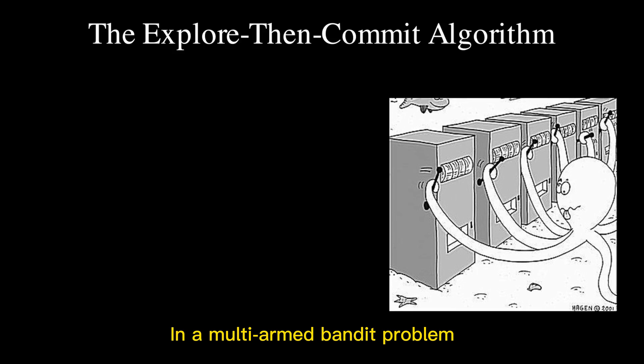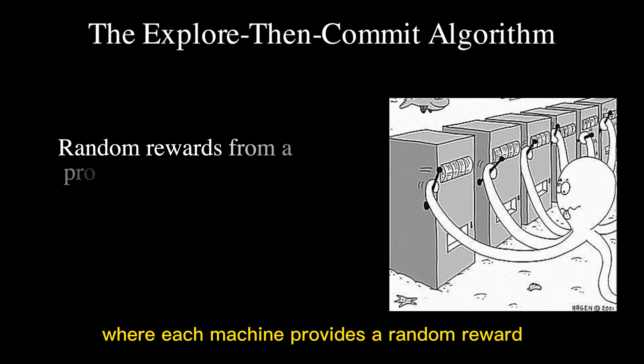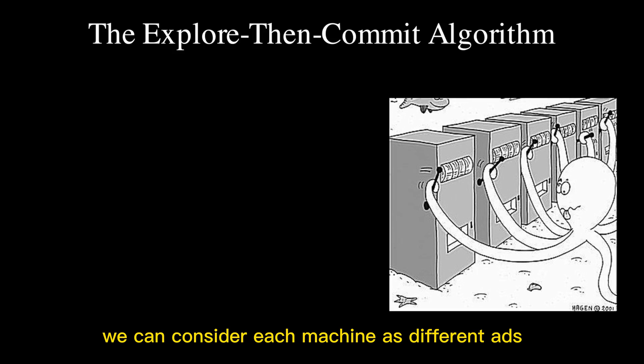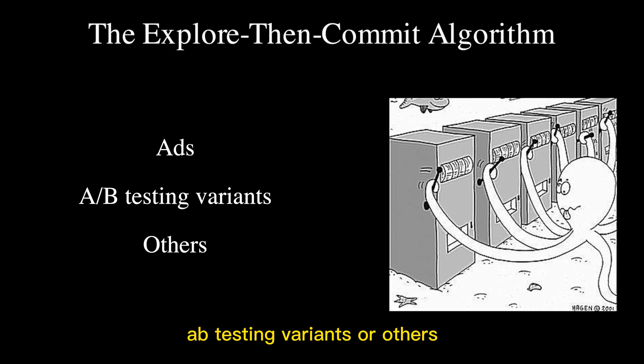In a multi-armed bandit problem, we have a row of slot machines where each machine provides a random reward from a probability distribution. In real life, we can consider each machine as different ads, A-B testing variants, or others.